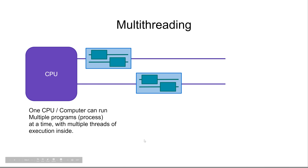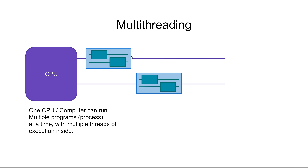Multi-threading is the same principle as multi-tasking, except multi-threading happens within an application. So instead of having one thread of execution inside an application, you can actually have multiple threads of execution inside an application. For instance, an application might both be downloading a file in one thread and playing music in another.